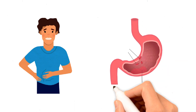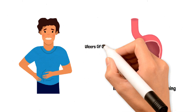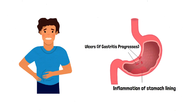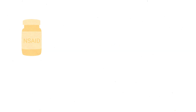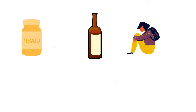Acute gastritis is a sudden temporary inflammation of the stomach epithelium, which mainly occurs due to NSAIDs, or non-steroidal anti-inflammatory drugs. Even though we can directly link NSAIDs to the pathogenesis of acute gastritis, there are many other factors we can indirectly link, such as alcohol use, depression, stress-inducing events, immunosuppressed conditions like AIDS, and severe burns.